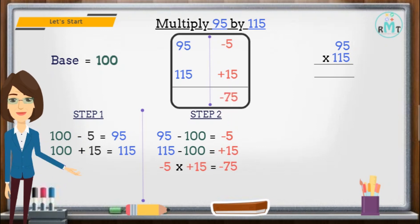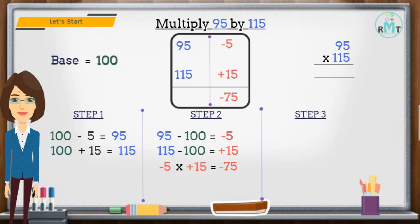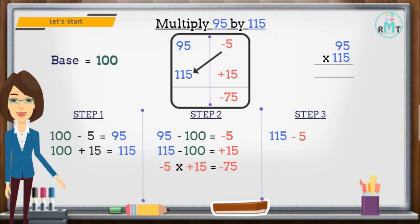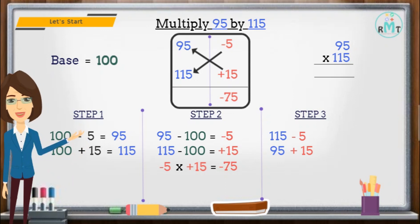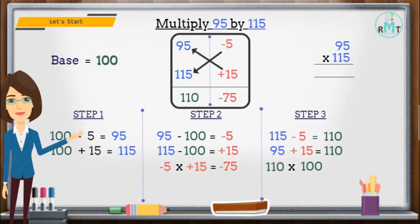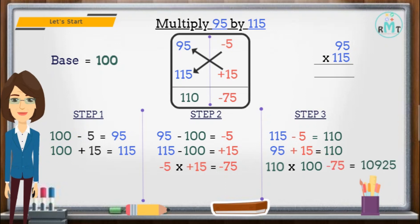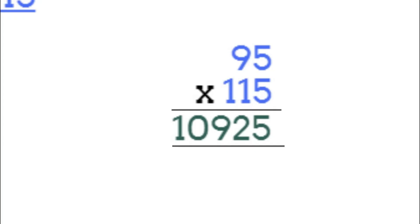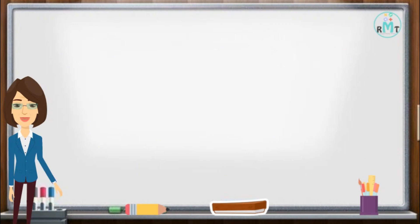Step 3: now we subtract 5 from 115, or we add 15 with 95 — we get the same answer, which is 110. Next, we multiply the left-hand side digit, which is 110, with the base and subtract the right-hand side digit to get the final answer. So the final answer is 10,925.